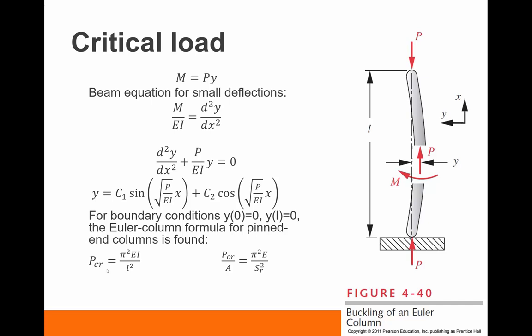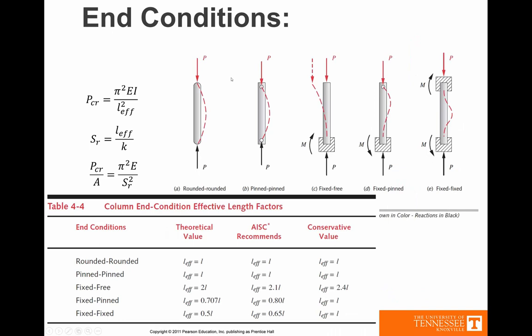So this is our solution now. Now we can consider what would happen if maybe we have a pinned joint at the bottom, but maybe we're doing something different at the top. So here are five different end conditions.